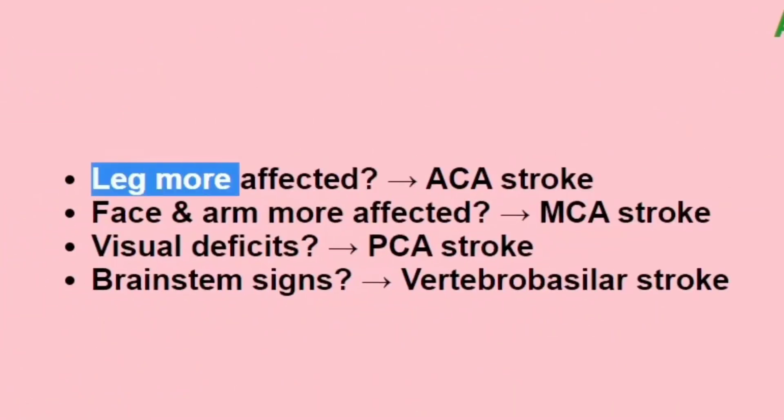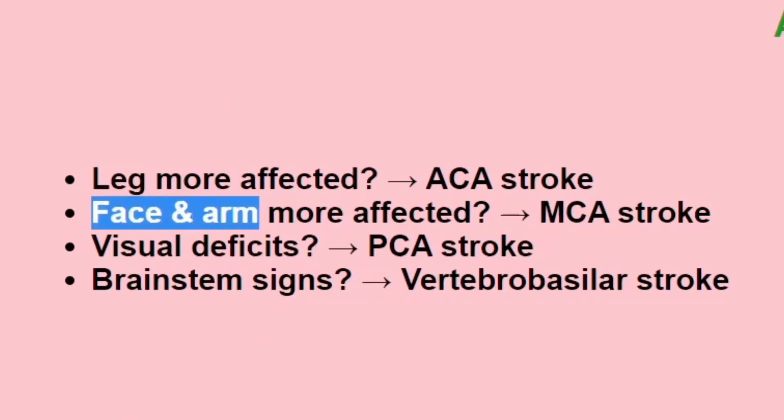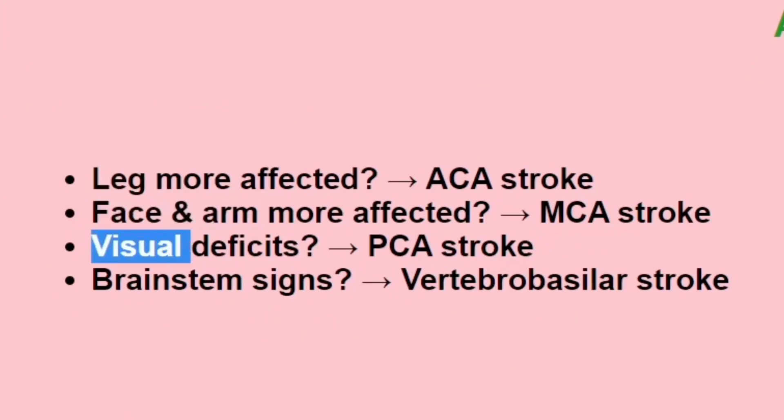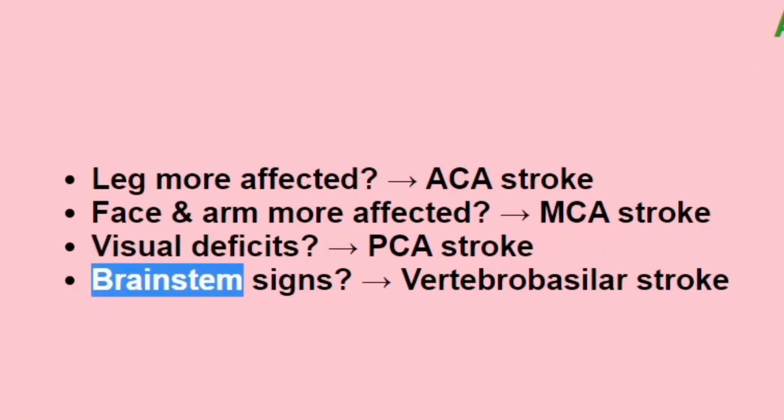If legs are more affected, it's an ACA stroke. Face and arm more affected — MCA stroke. Visual deficit — PCA stroke. And brainstem signs — vertebrobasilar stroke.